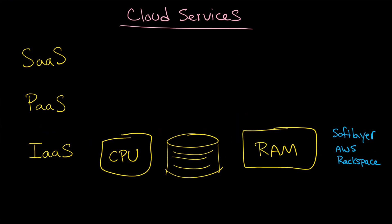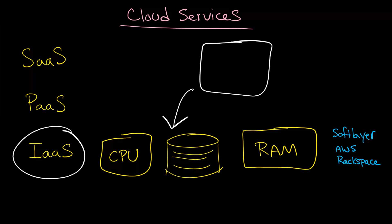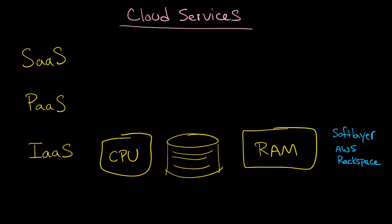In this video, we're going to look at cloud services, and we're going to start with infrastructure as a service. If you want to build some server and put it on the cloud somewhere, it obviously needs to run on some kind of hardware, and that is infrastructure as a service. Here you see SoftLayer, Amazon's AWS, and Rackspace.